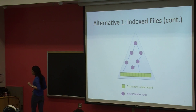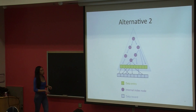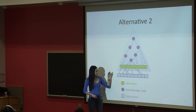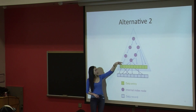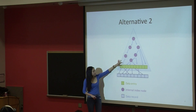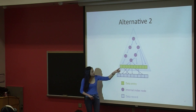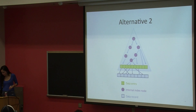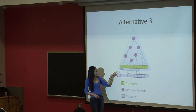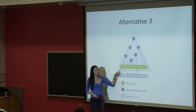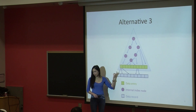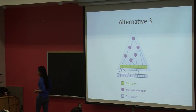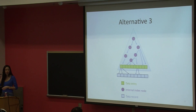Last time on the slide I made a mistake but I fixed it this time: in alternative two, we have the data record already separate from data entry, and data entry maps to the data records. It's still a one-to-one mapping, so there's no one data entry pointing to multiple data records. However, for alternative three it's a bit different — for one data entry, we can point to more than one data record. So in alternative three, one data entry K can map to a list of RIDs. Alternative three is a bit more compact than alternative two.